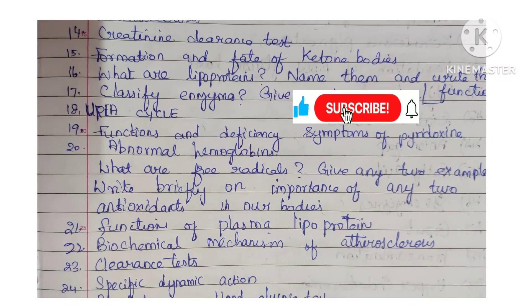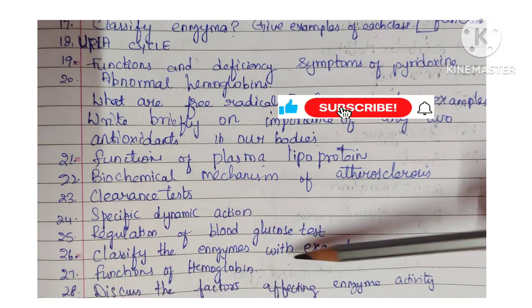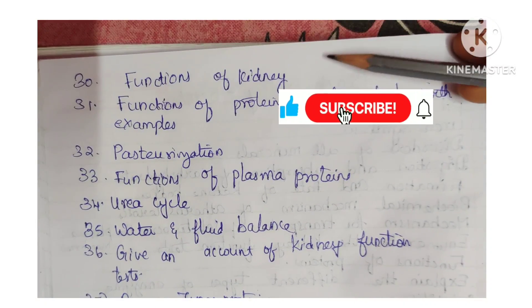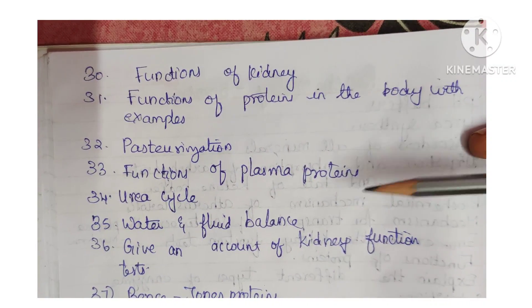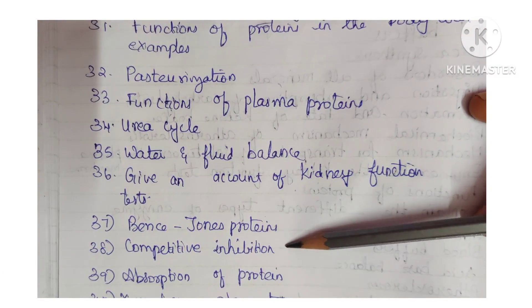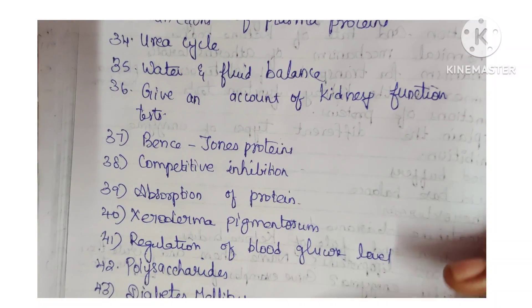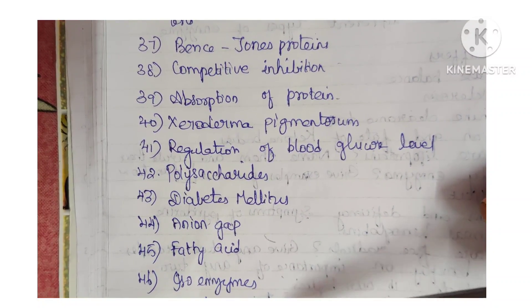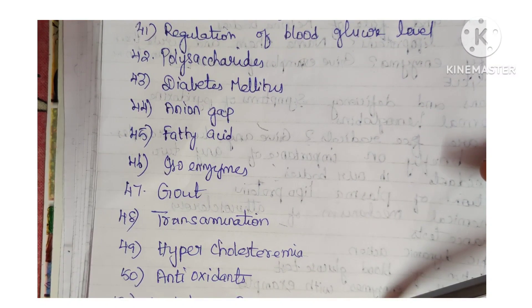Further Biochemistry topics: Clearance Test, Specific Dynamic Action, Regulation of Blood Glucose Level, Classify Enzymes with Examples, Functions of Hemoglobin, Factors Affecting Enzyme Activity, Atherosclerosis, Functions of Kidneys, Functions of Proteins in the Body with Examples, Pasteurization, Functions of Plasma Proteins, Urea Cycle, Water and Fluid Balance, Kidney Function Test, Bence Jones Protein, Competitive Inhibition, Absorption of Proteins, Xeroderma Pigmentosum, Regulation of Blood Glucose Level, Polysaccharides, Diabetes Mellitus, Anion Gap, Fatty Acids, Isoenzymes, Gout, Transamination, Hypercholesterolemia, Antioxidants, Mutation — definition and its types.